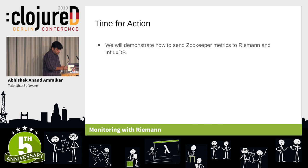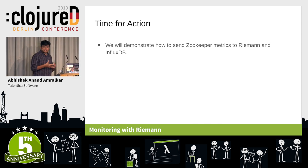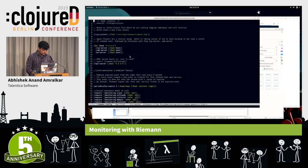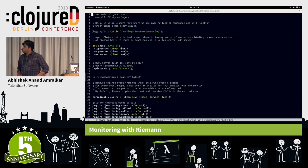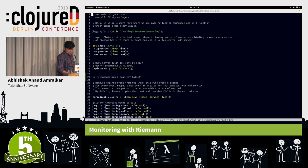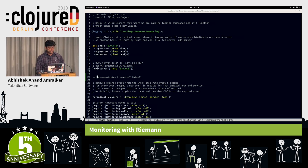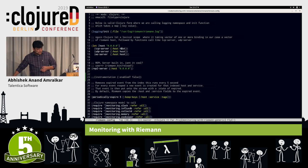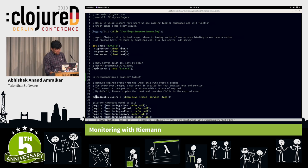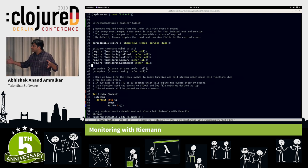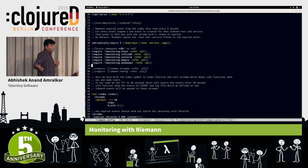I'll give a brief demo of how the Riemann Dash looks and how we've managed the Riemann configuration. This is the Riemann configuration file. What we have here is instrumentation currently disabled, but we are saying 'periodically expire' — it checks for expired events every five seconds. These are our namespaces; we've divided our monitoring system checks into a bunch of files depending on what they do.